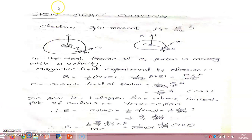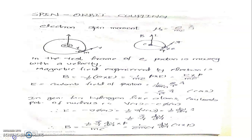We have been talking about the fine structure in hydrogen or hydrogen-like species that include helium-plus, lithium-two-plus, etc. — that is, one-electron species. In this kind of one-electron species, the fine structure arises because of two prominent energy corrections: the first arising from the relativistic correction, and the second arising from spin-orbit coupling. We have already seen the relativistic correction, which is of the order of alpha to the fourth.